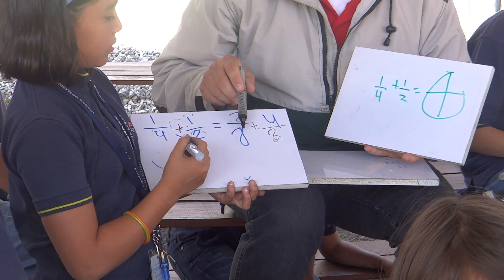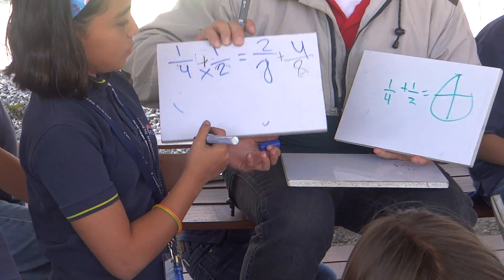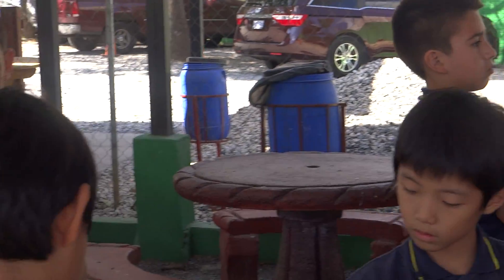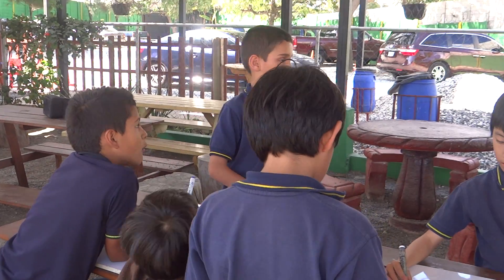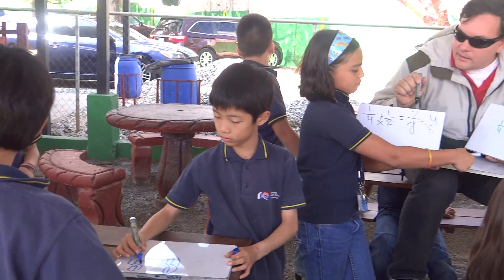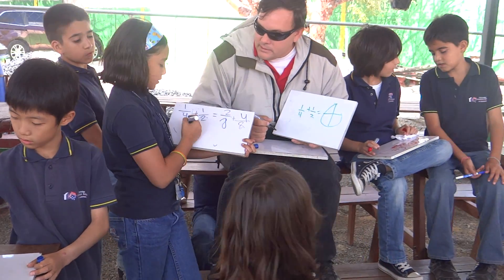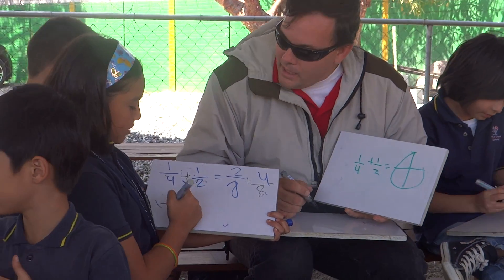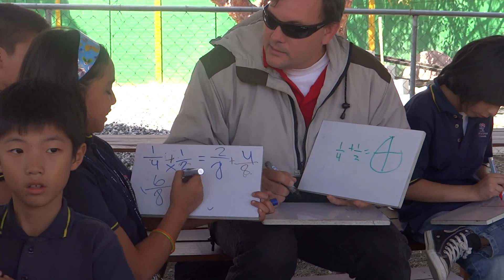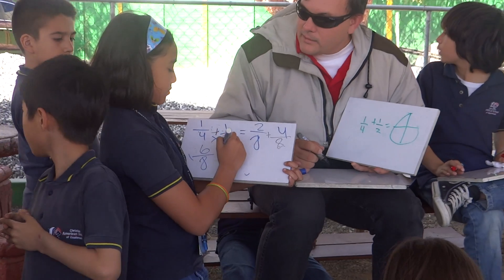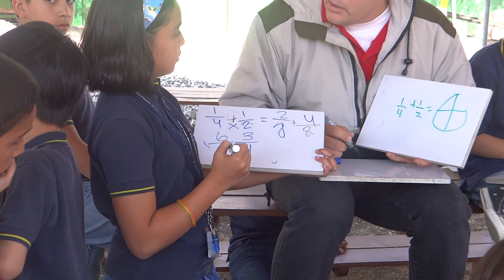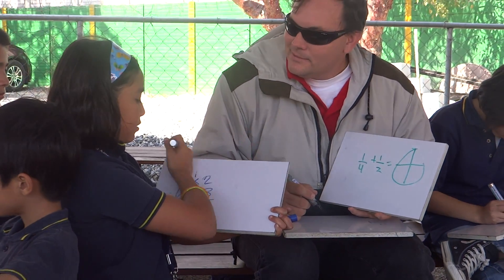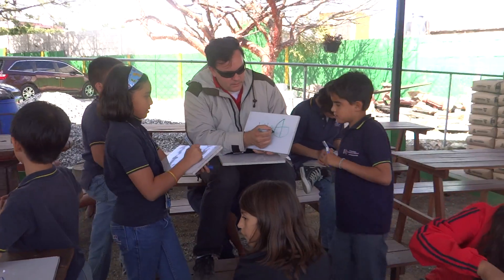Now they're both the same, right? Boys, the bottoms are the same — same number. So now I can add the tops. Two and four is six — six eighths. Now I can reduce it back down — three-fourths. So three-fourths of the pizza is what I want, and that's what we got: three-fourths.